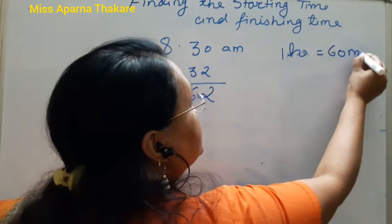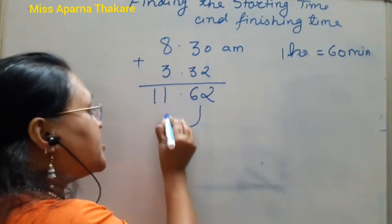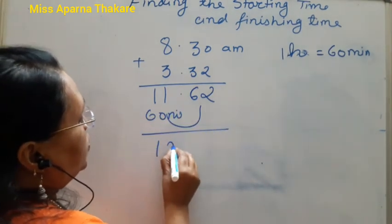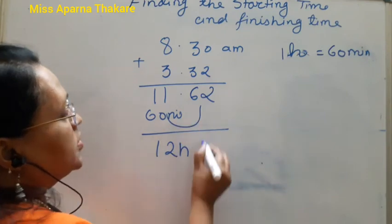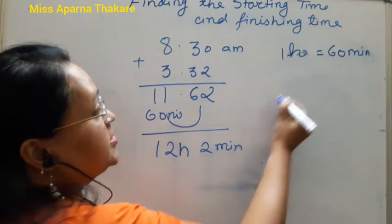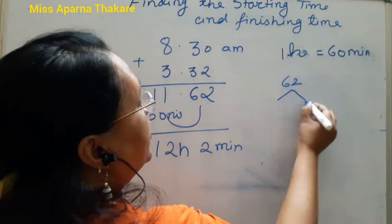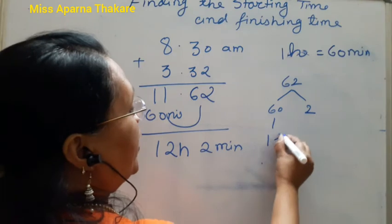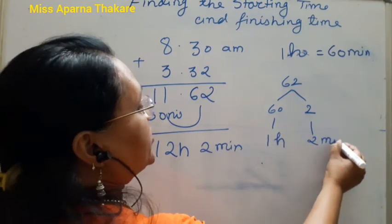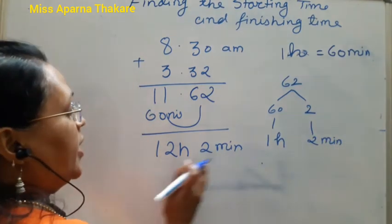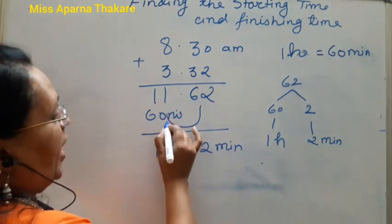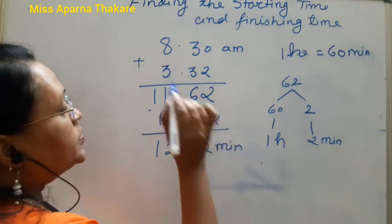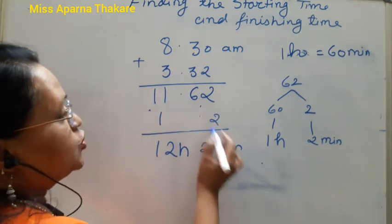Since 1 hour equals 60 minutes, we convert the 62 minutes. 62 minutes becomes 60 plus 2, which equals 1 hour and 2 minutes. So we add that 1 hour to the 11 hours, making it 12 hours 2 minutes.